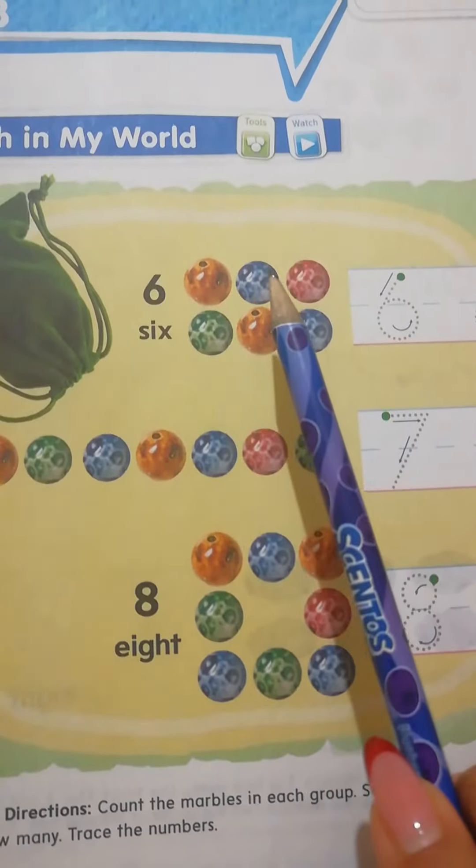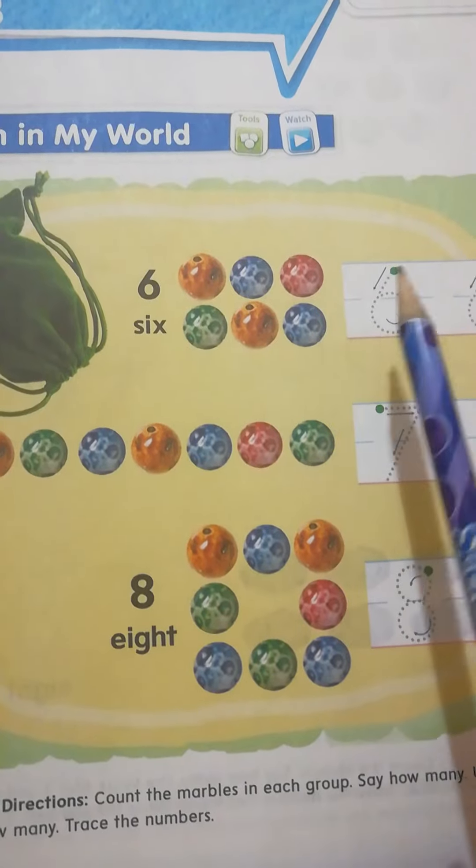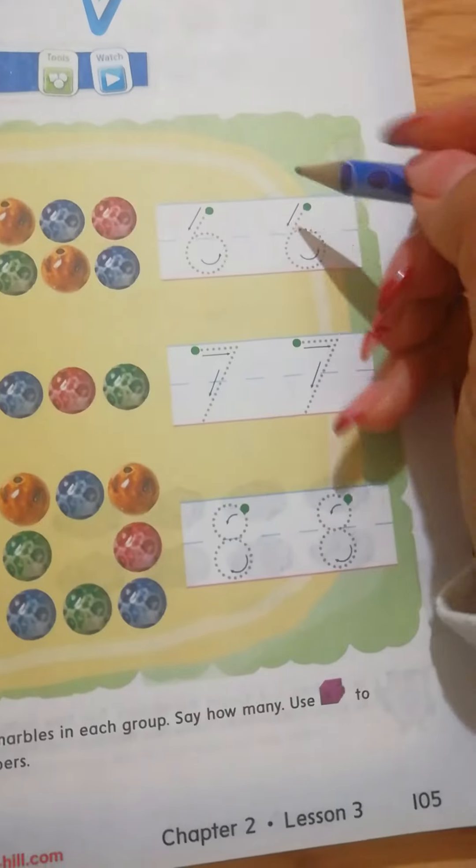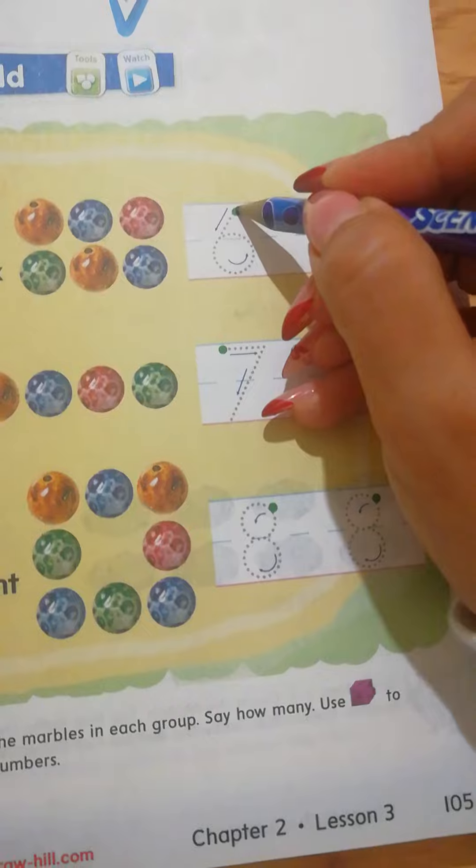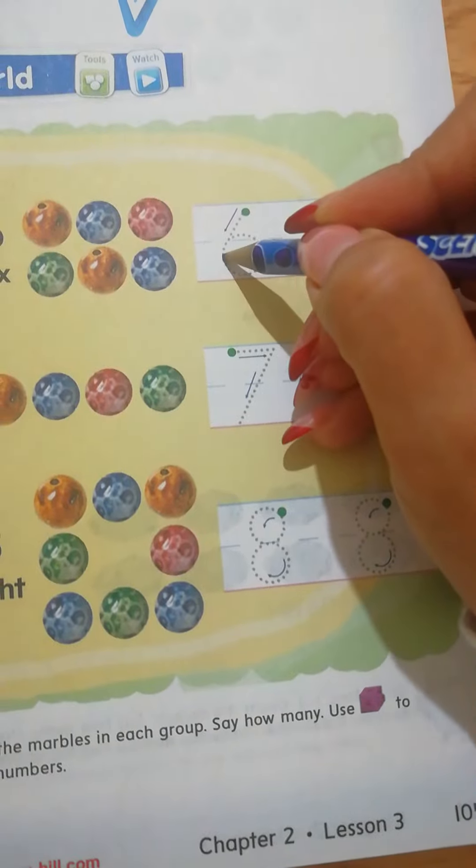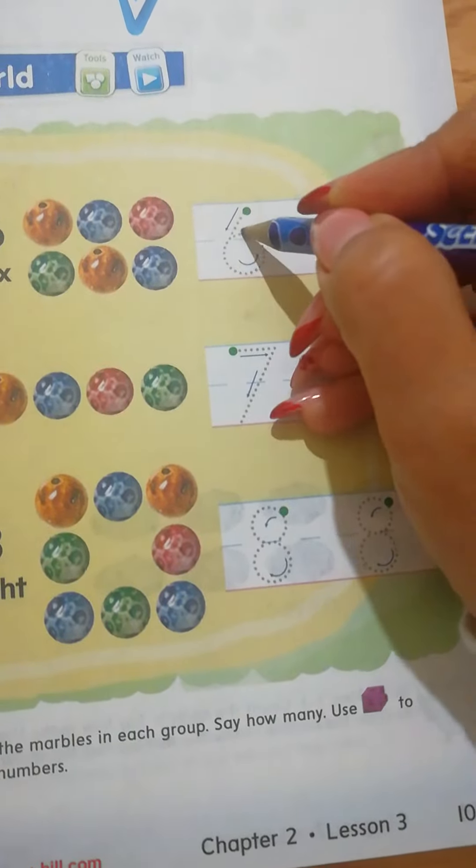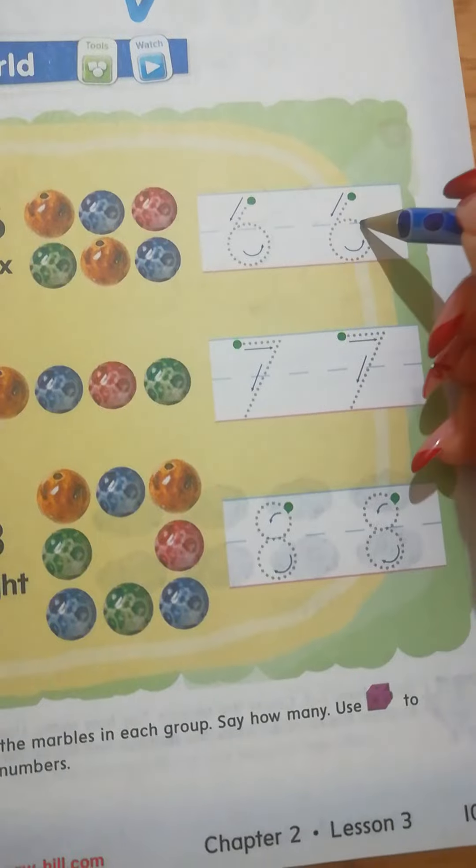So here, look, we have to count each group, then write the number. Here we have 1, 2, 3, 4, 5, 6. So we trace number 6 two times. We start at the dot, go down, then turn around. This is number 6. Trace 6.